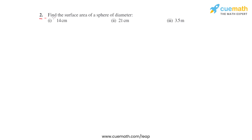In the second question of this exercise, it is asking to find the surface area of a sphere of given diameter. The first part has diameter 14 centimeters, second part diameter 21 centimeters, and the third part diameter 3.5 meters. So we have to find the surface area, and first we will find the radius.